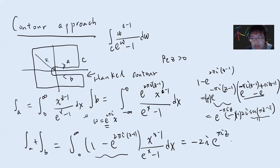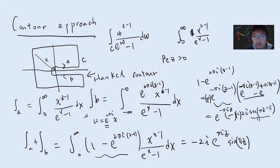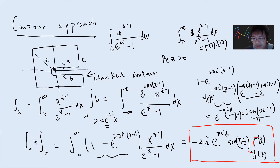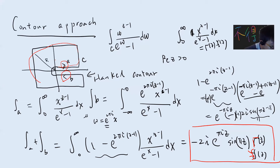So the final result from combining parts A and B is -2i · e^(πiz) · sin(πz) times the integral of x^(z-1)/(e^x - 1) dx from 0 to infinity, which is the famous result equal to Γ(z)·ζ(z). This is the first equation. But note this is only parts A and B of the contour — the full contour integral will also include residue contributions.